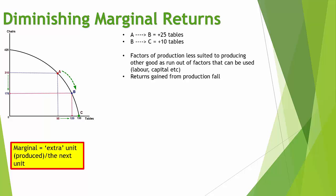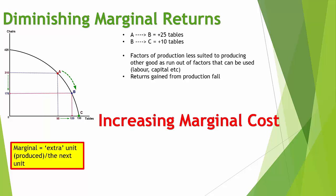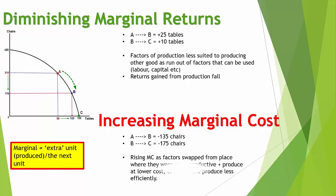A closely related concept is increasing marginal cost. From A to B we gave up 135 chairs; from B to C we give up 175 chairs — there's a greater marginal cost at each step. This is because factors of production being switched from a use where they were more efficient (and thus lower cost) to one where they are less efficient means the marginal cost of production rises. Together, diminishing marginal returns and increasing marginal cost explain the concave shape of the PPF, with increasing opportunity cost at each step along the curve.